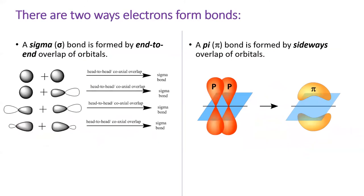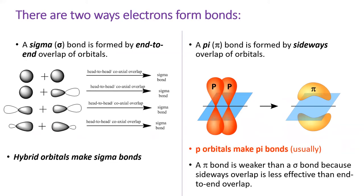Looking at these more in depth, sigma bonds are formed from end-to-end overlap of two orbitals. There are lots of ways to make sigma bonds, but they all share one thing in common: the overlap is directly between the atoms. Pi bonds, on the other hand, do not have electrons directly between the two atoms — instead, a pi bond extends above and below the two atoms. In general, hybrid orbitals make sigma bonds, while p orbitals make pi bonds.